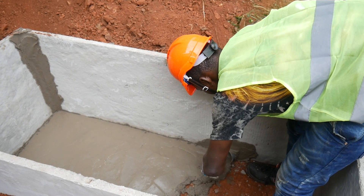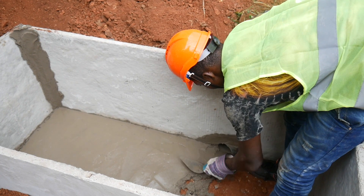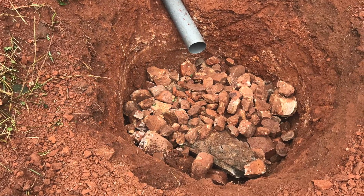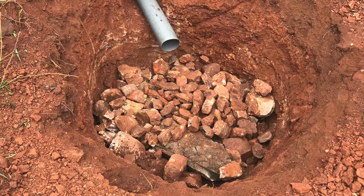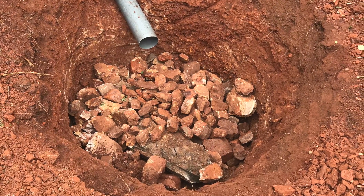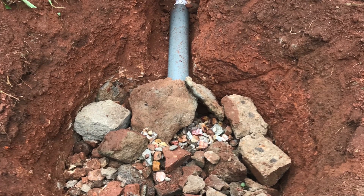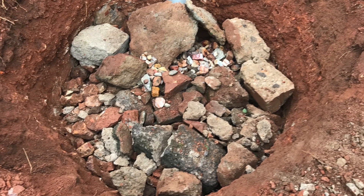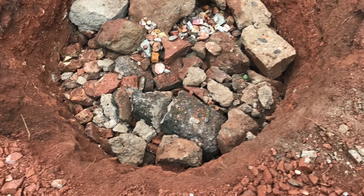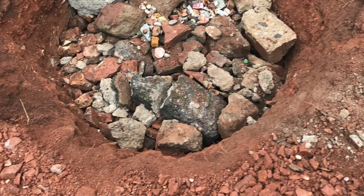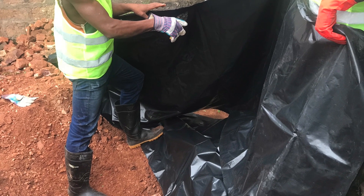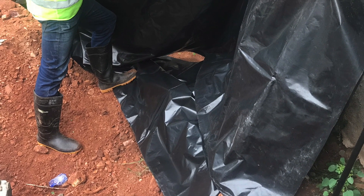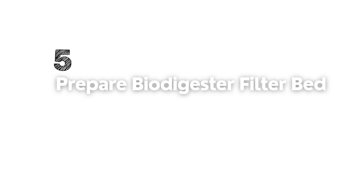With mortar mixed at the required ratio, do the screeding of the digester bed floor. In some cases, depending on the soil, a concrete mixture could also be used. You can then go back and finish the so-called pit while the screeding dries. Fill the so-called pit with stones, rocks, or broken blocks — whichever is available — to allow for easy penetration of the wastewater. Fill to the desired level, above the leshe pipe and all the way to the top, then cover it with a black polythene bag so that rainwater will not render the so-called pit ineffective.